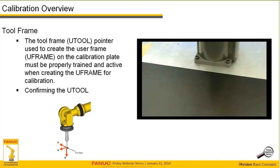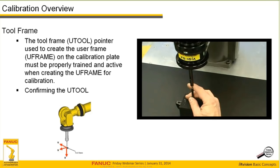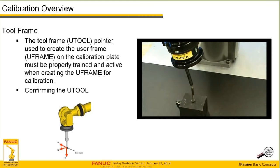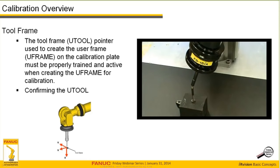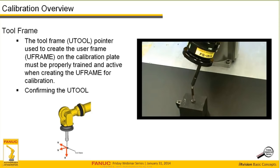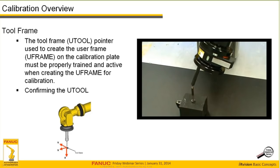The first step in creating a user frame is to make sure we have a properly trained and active tool frame pointer when doing a manual U-frame teach. I like to confirm the U-tool is correct by placing it at a known location and then jogging the robot in yaw, pitch, and roll, verifying that the pointer maintains its absolutely correct relationship to the tip of the object. This confirms we have a correct pointer — one of the ways you can really mess up a calibration is to have an incorrect pointer when touching up the U-frame for the calibration grid.